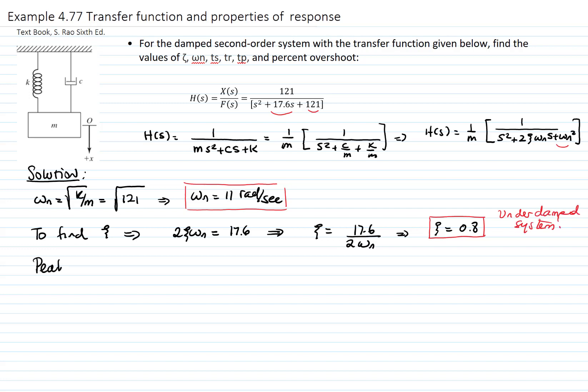The peak time is defined as pi over omega d. And omega d is defined as omega n times square root of 1 minus zeta squared. We plug in the values and get that the peak time is 0.476 seconds.